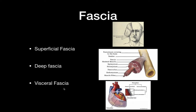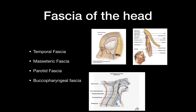Now we can start with the fascias of the head. The fascias of the head consist of four fascias: the temporal, masseteric, parotid, and buccopharyngeal.